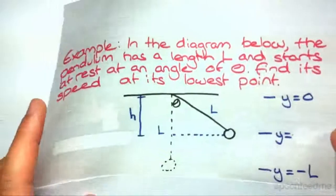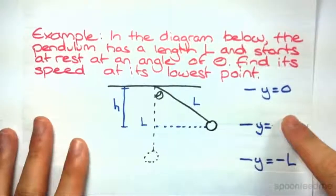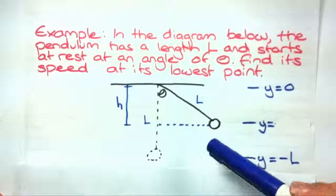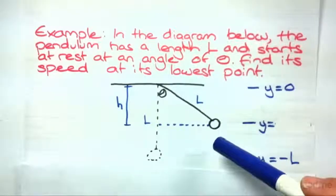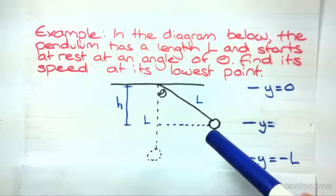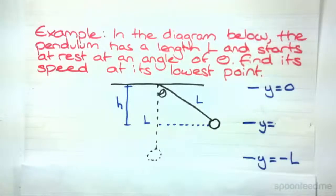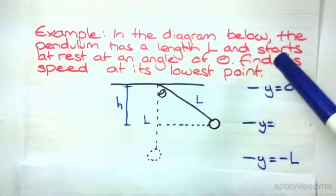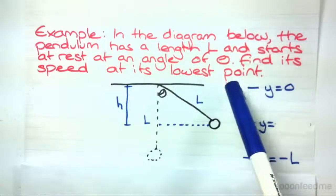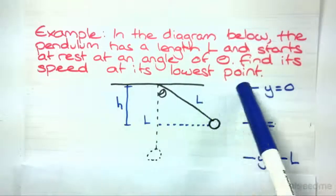So we've got an example here. Just a hint, a lot of pendulum questions look really complicated but can be solved quite simply with this conservation of mechanical energy concept. So let's have a look at this one. In the diagram below the pendulum has a length L and starts at rest at an angle of theta. Find its speed at its lowest point.